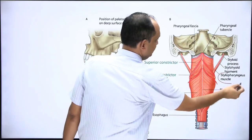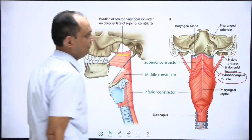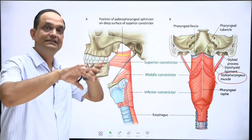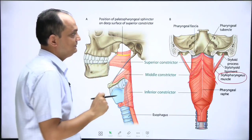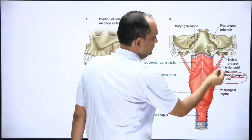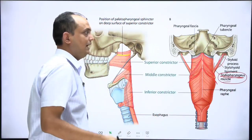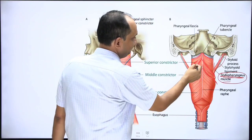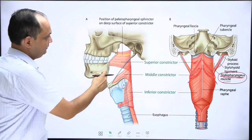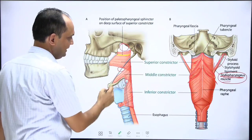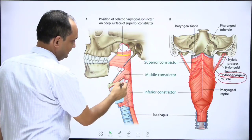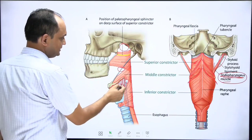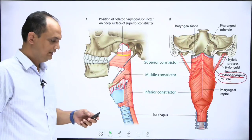Here you can see that the stylopharyngeus muscle is entering inside. In the last class on pharyngeal muscles, I mentioned that all muscles of the pharynx arise from inside except the stylopharyngeus, which is longitudinal but takes origin from the outer side — from the styloid process — and enters inside the pharynx through the gap between the middle and superior constrictor. The gap between the middle and inferior constrictor is closed by the thyrohyoid membrane, and structures pierce this membrane to enter inside the larynx.